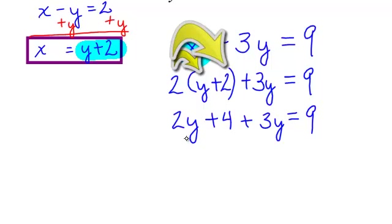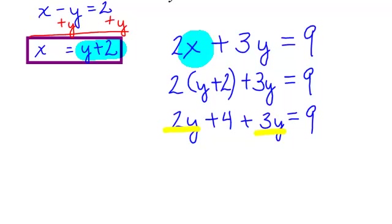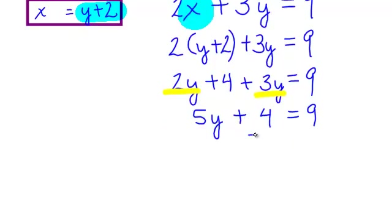Let's do a little distributive property. I will have 2 times y, that will be 2y, 2 times 2 is 4. Looks like I have some like terms here, the 2y and the 3y. That will be 5y plus 4 equals 9. Subtract 4 from both sides and you will get 5y equals 5. So y will equal 1.